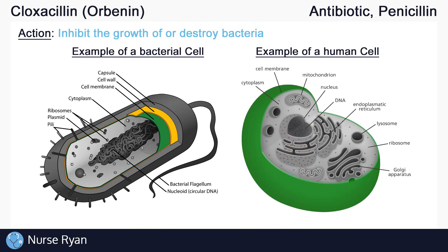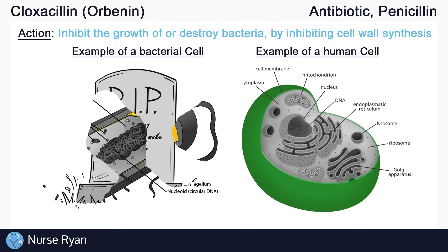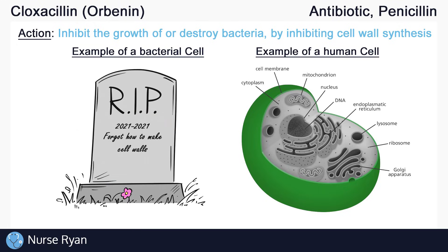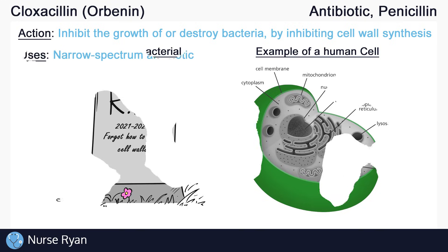The way that penicillins work is by inhibiting cell wall synthesis in susceptible bacteria, basically preventing the bacteria from growing their cell walls. And without a cell wall, bacterial cells become very vulnerable and quickly die off. This way, penicillins do not affect regular human cells like blood cells, muscle cells, etc., but only bacterial cells.